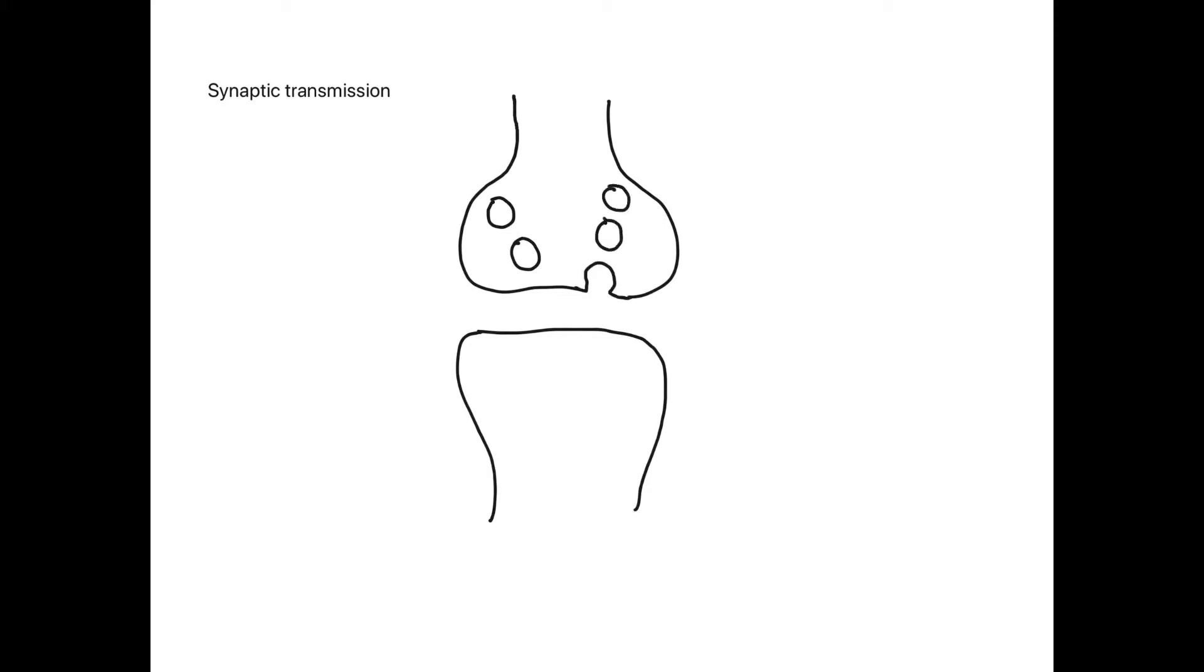So there is a gap present between two neurons through which the impulse is transmitted, and that junction where the axon and the dendrite of two neurons meet for movement of a nerve impulse is called a synapse.